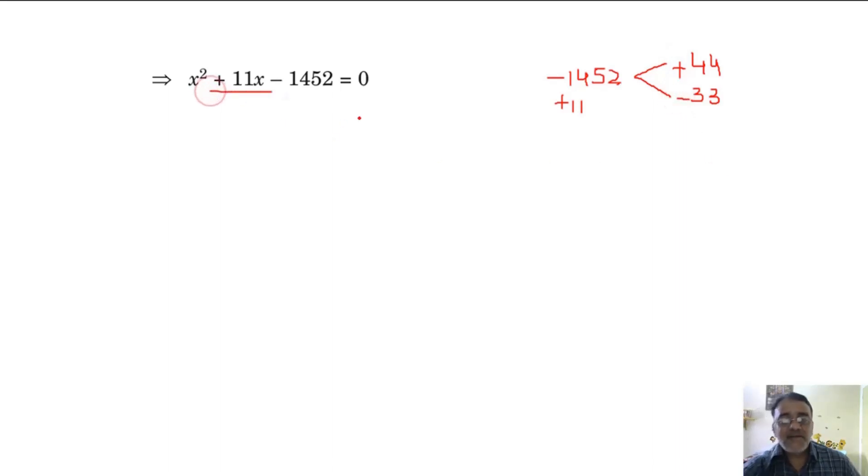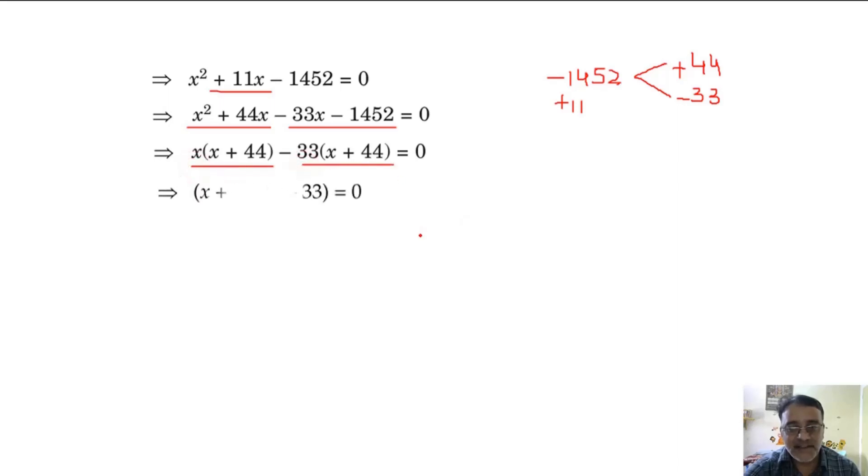Now splitting 11x as plus 44x and minus 33x. Now what is the common term between these two? x. Aur yeh donoh mein? Minus 33. Right. Fir donoh mein x plus 44 common factor hai.